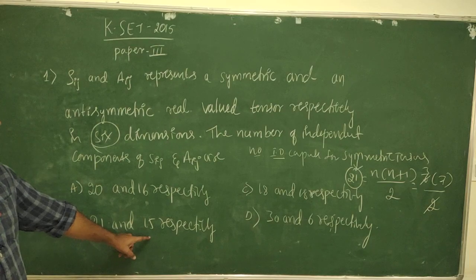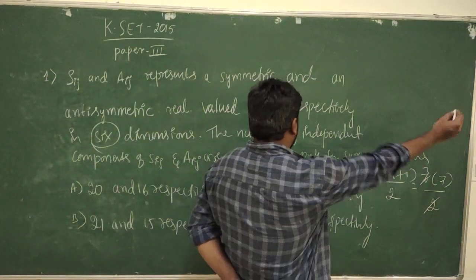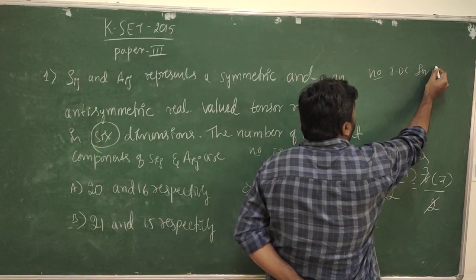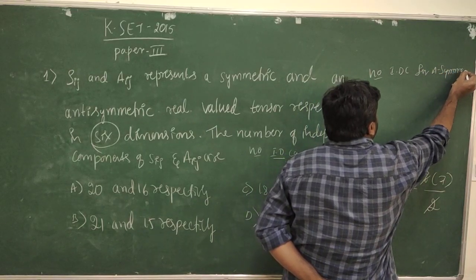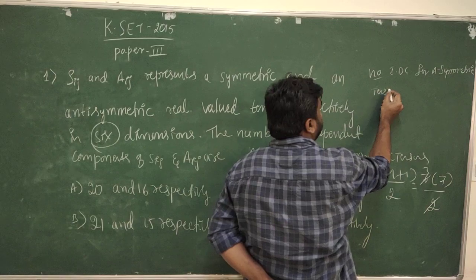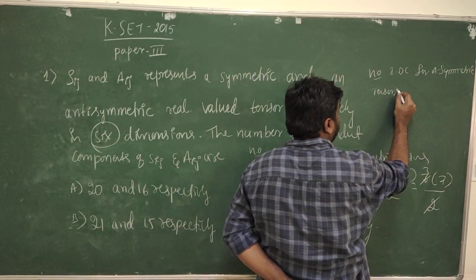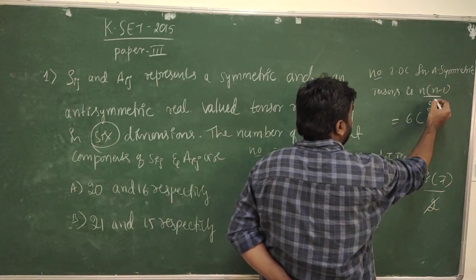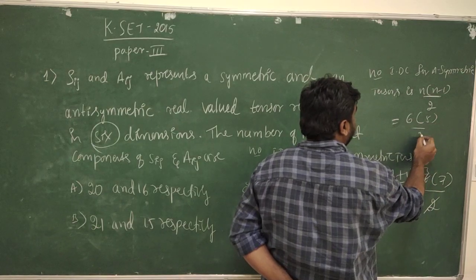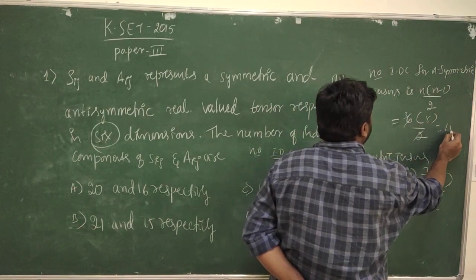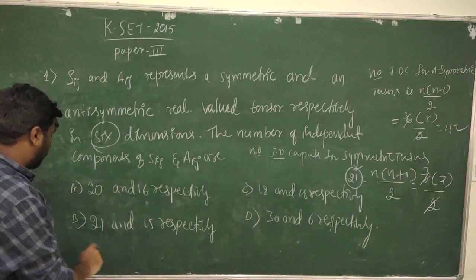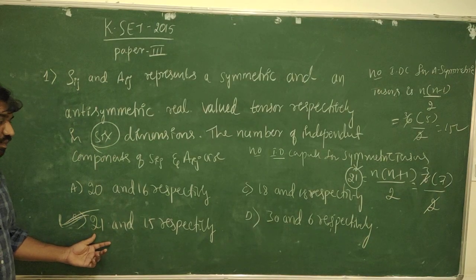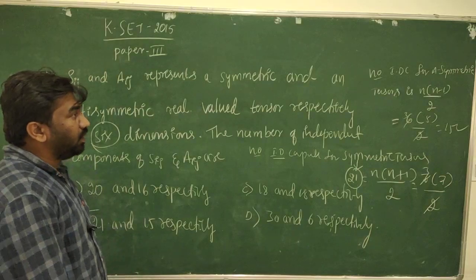For the anti-symmetric tensor, the number of independent components is n(n-1)/2. That gives 6 × (6-1)/2 = 6 × 5/2 = 15. So there are 15 independent components for Aij. Therefore, option B is correct: 21 symmetric and 15 anti-symmetric independent components.